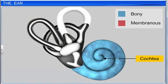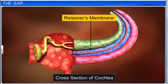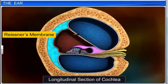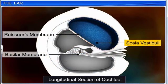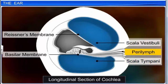The cochlea is the coiled portion of the bony labyrinth, and is also known as the auditory section of the inner ear. The cochlea has two membranes, namely Reissner's membrane and the basilar membrane. These divide the bony labyrinth into an upper section called the scala vestibuli and a lower section called the scala tympani, which are both filled with perilymph.